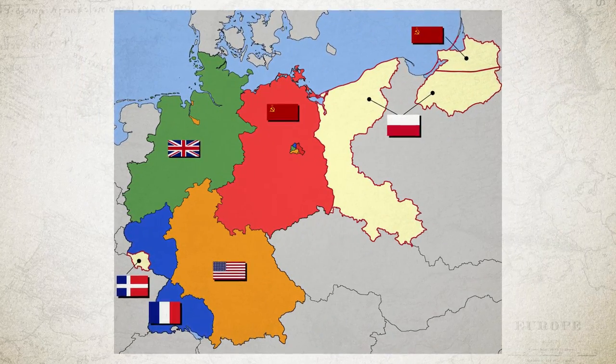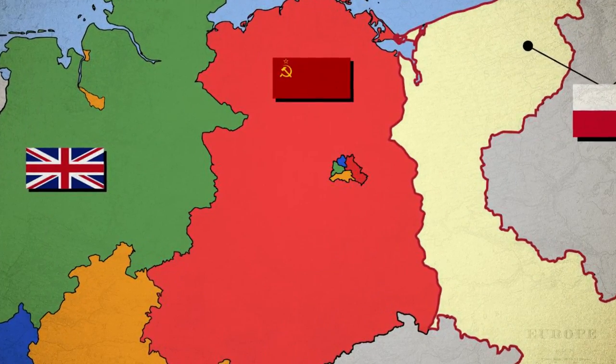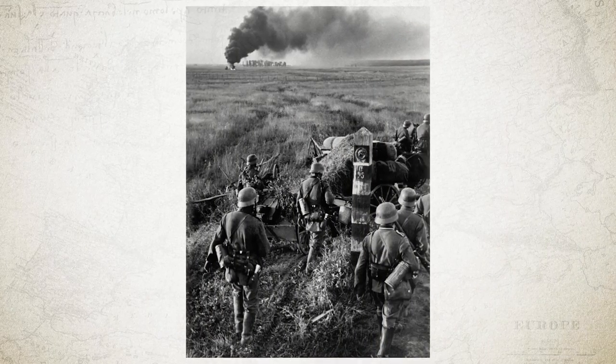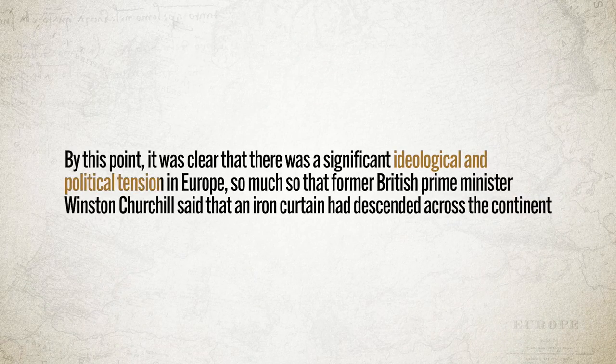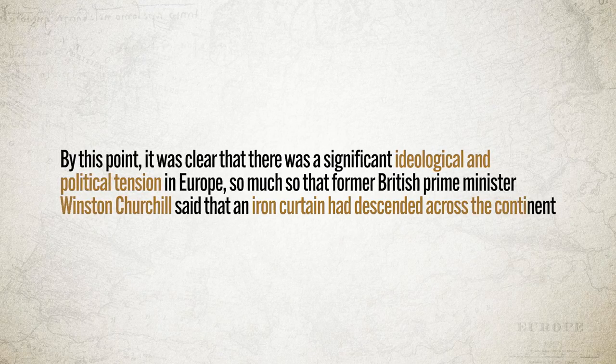From Stalin's point of view, these states could act as a buffer zone between Europe and the Soviet Union. As a result, suspicion and mutual distrust began. The handling of post-war Germany further divided the two superpowers — Germany was split into four occupation zones controlled by the Soviets, French, British, and US. East Germany quickly became another communist state, and Stalin wanted to keep Germany weak. By this point, former British Prime Minister Winston Churchill declared that an iron curtain had descended across the continent, signaling the complete division between democratic and communist Europe.